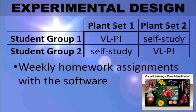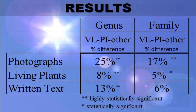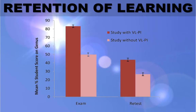The name of the program that we used is Visual Learning Plant Identification, or VLPI for short. At the end of the semester, we found that the students did up to 25% better on the plants that they learned with the software. These results have recently been published in the journal CBE Life Science Education. Six months after the class ended, we came back and retested the students. Naturally, we found a decrease in their ability to identify plants, but they still did significantly better on those plants that they learned with VLPI.